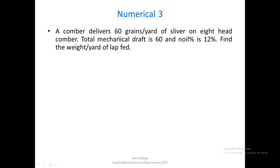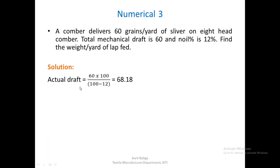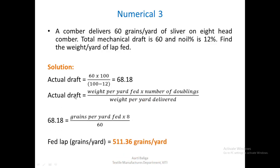For the next problem: a Comber delivers 60 grains per yard of sliver on an 8-head Comber. Total mechanical draft is 60 and noil is 12 percent. Find the weight per yard of lap fed. The first step is to find actual draft using the formula, which gives 68.18 — more than 60. Using the formula: actual draft equals (weight per yard fed) divided by (weight per yard delivered multiplied by number of doublings), with 8 doublings and delivered weight of 60 grains per yard, the fed lap weight comes out to be 511.36 grains per yard.